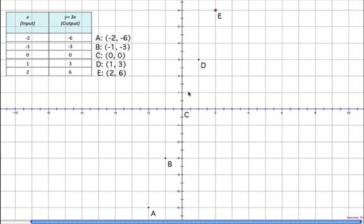And so, now what we do is draw a line through all the points and extend it and draw arrows at the end of the lines. And lastly, you label the line with the function. And in this case, it's y equals 3x.